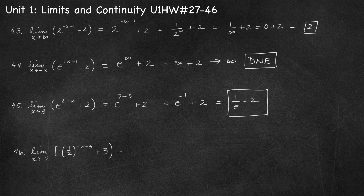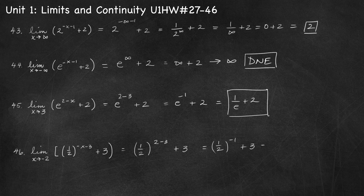Number 46, limit as x approaches negative 2. Using substitution: 1 half to the power negative negative 2 minus 3 plus 3, which simplifies to 1 half to the power negative 1 plus 3. Converting to a positive exponent gives 2 to the power 1 plus 3, which equals 5. So the limit is 5.